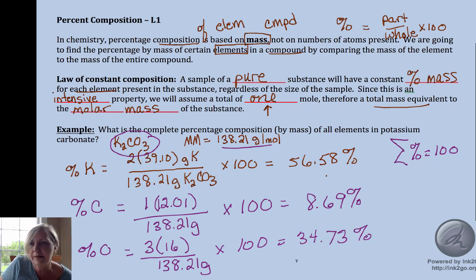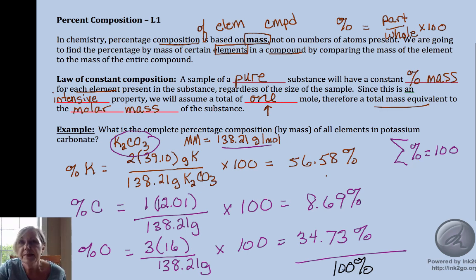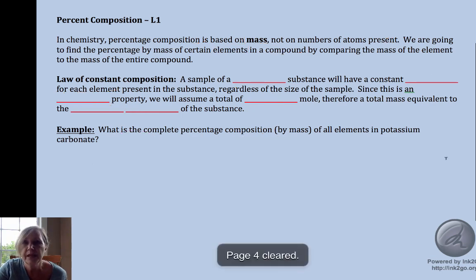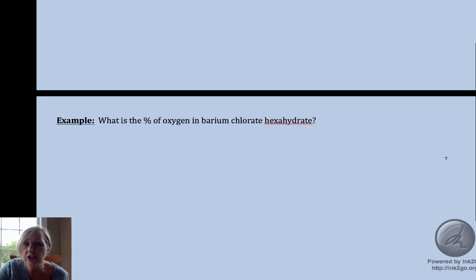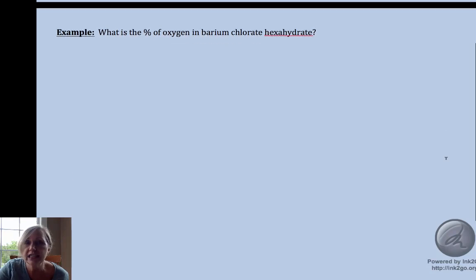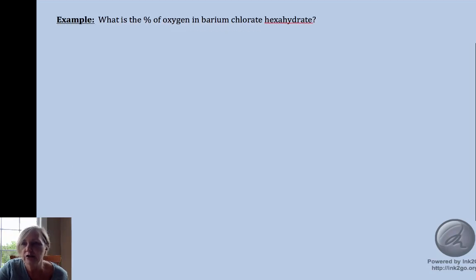And within rounding, that should sum up to equal the total of 100%. So that's how you would do it of each element. If they say of all elements, you have to do each and every element. All right, you may be asked to do just a particular compound in there.